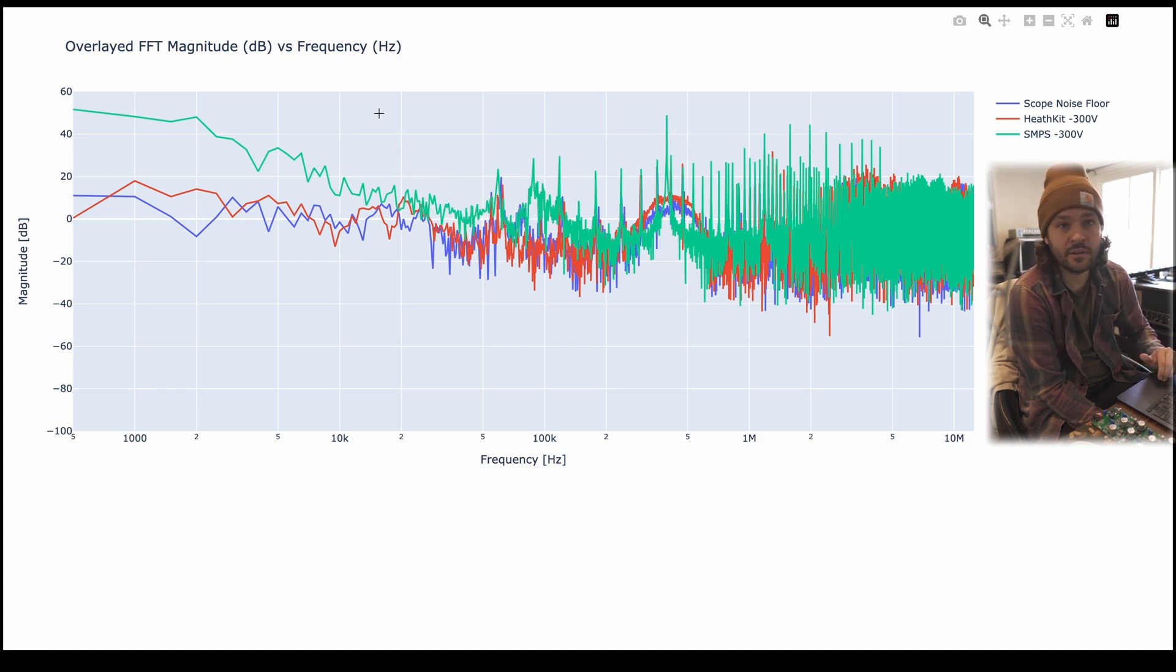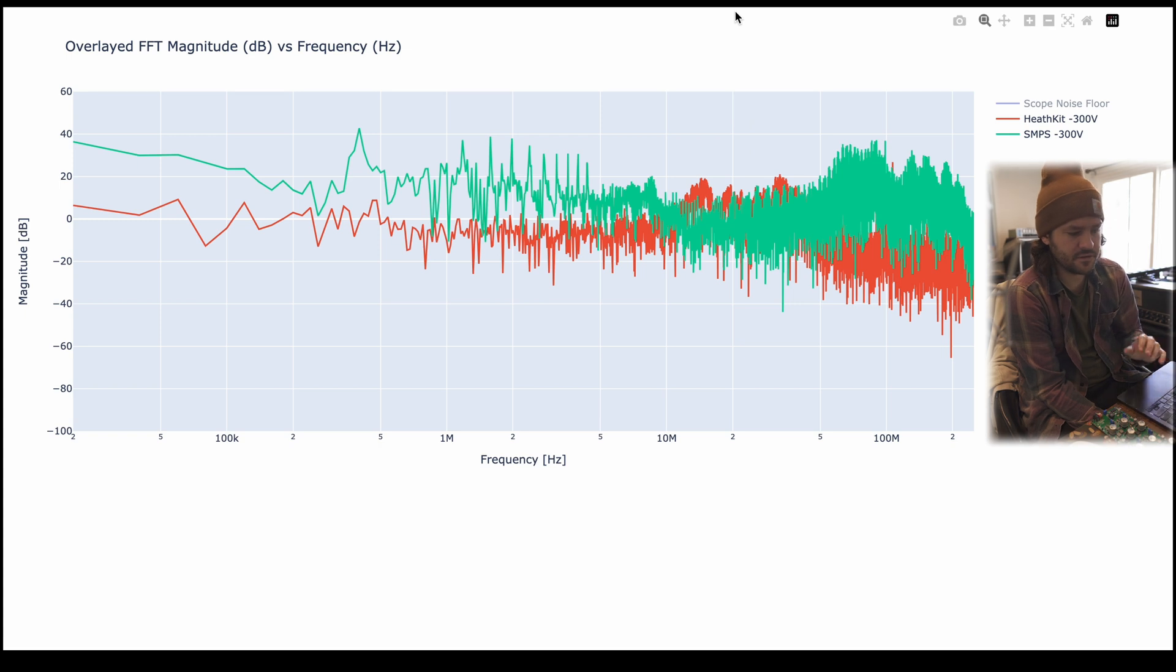Here's just an even further zoomed out plot where we go all the way up to 200MHz so we can compare that. The Heath kit really has nothing—that linear supply—but the switch-mode does have that 400kHz switching noise there and it's worse below.